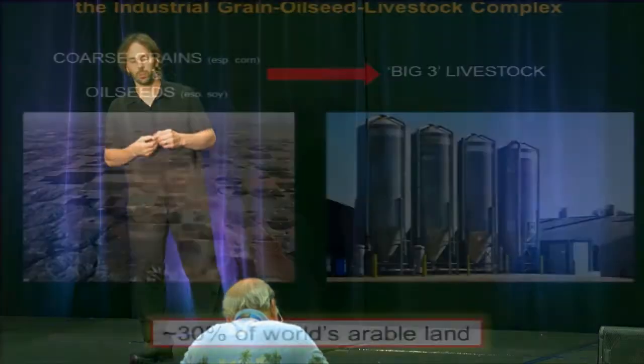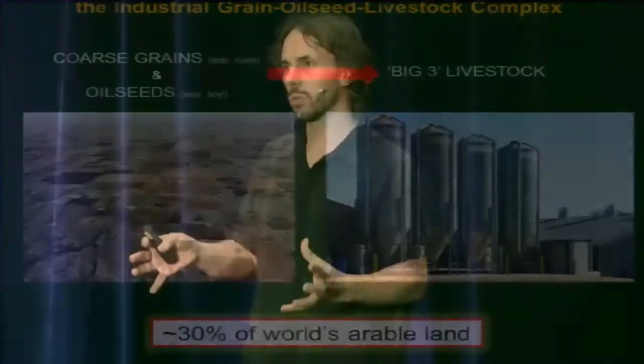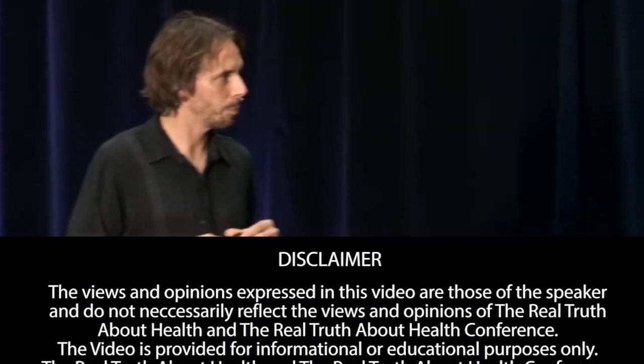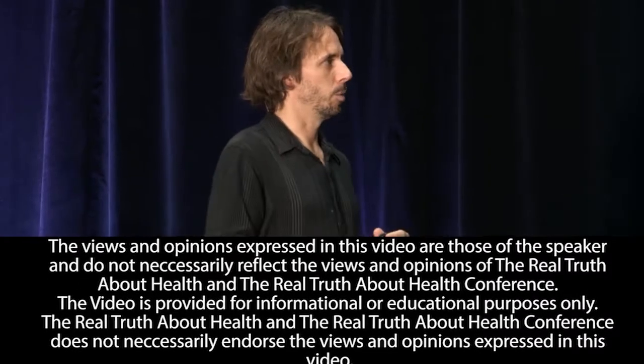One of the big things I try to do is present a way of thinking through how the dominant landscape in North American agriculture, and a growing presence on a world scale, the industrial grain-oilseed livestock complex, how these environments are organized. A small number of grain and oilseed monocultures are devoted to a small number of animal species that are growing very rapidly in scale, and this occupies close to a third of the world's arable land.